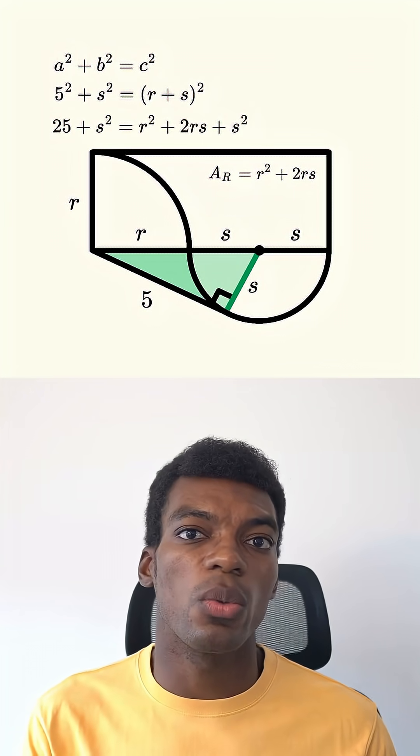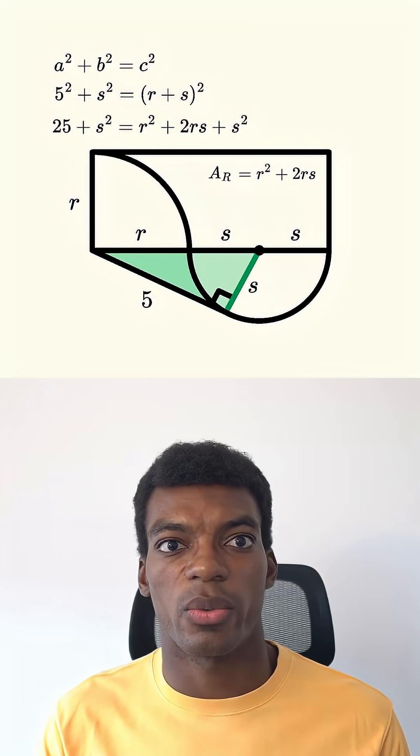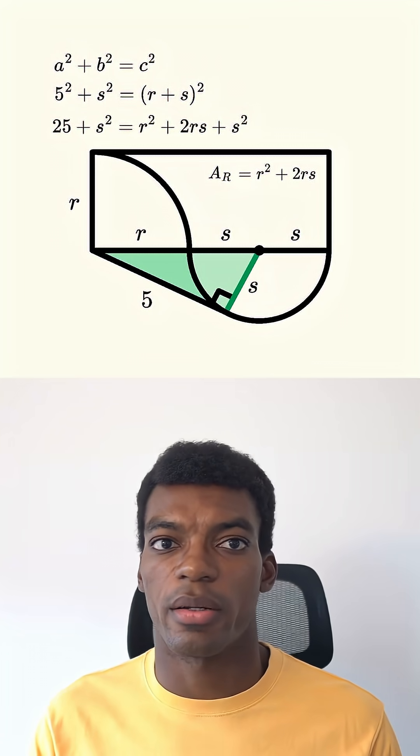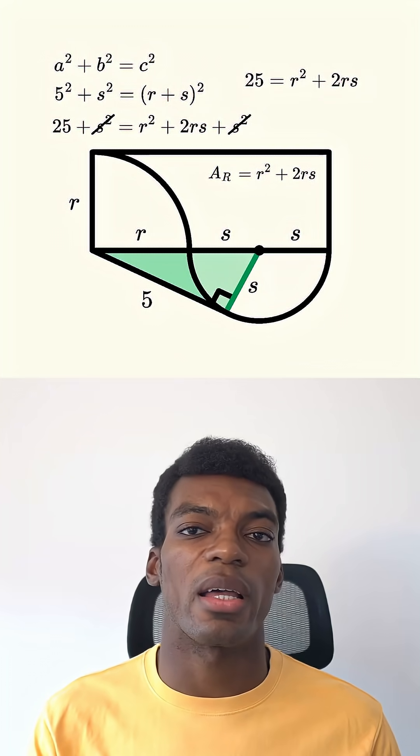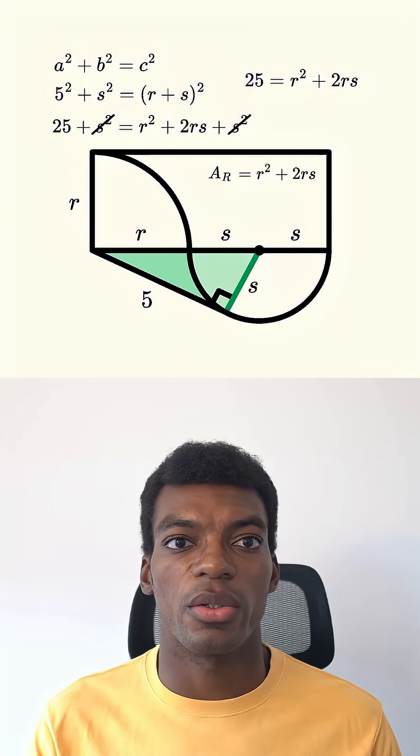And after squaring that, we get 25 plus s squared equals r squared plus 2rs plus s squared. Here we can cancel the two s squareds, which leaves us with 25 is equal to r squared plus 2rs.